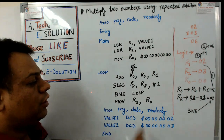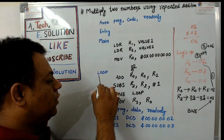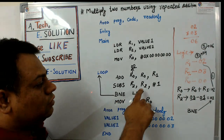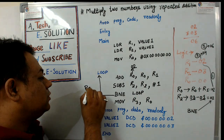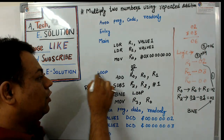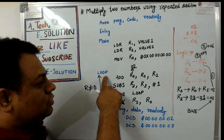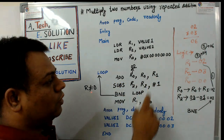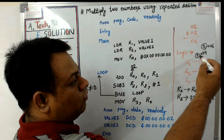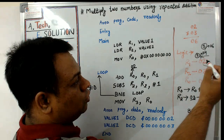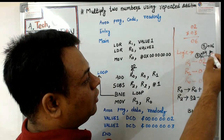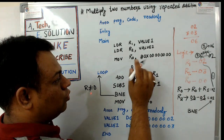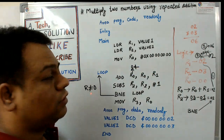After that we use the BNE instruction — branch if not equal. If r2 is not equal to 0 it goes back to the loop label. In the next iteration, we add r0 with r1 again. At this point r0 contains 0x02, which is added with 0x02, giving a result of 0x04. So r0 now holds the result 0x04.